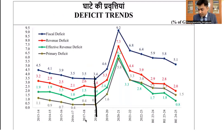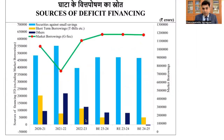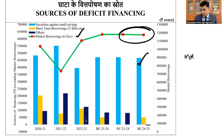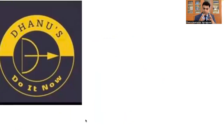On deficit trends: until 2019 there was consistent decline, after 2021 there has been consistent decline, but during 2020 and 2021 there was a rise in fiscal deficits — that is the only exception. Regarding deficit financing, the highest source is market borrowings, followed by securities against small savings, followed by short-term deposits like T-bills, and then others. So government is borrowing more through long-term government securities, followed by small savings borrowing.